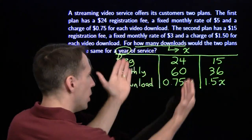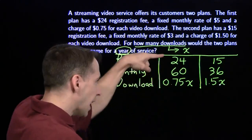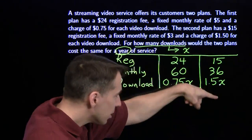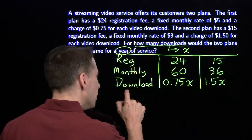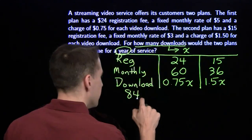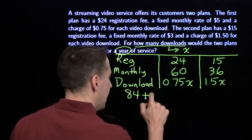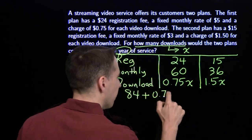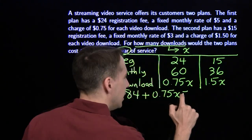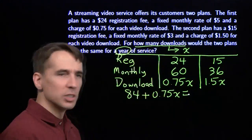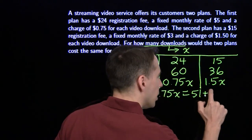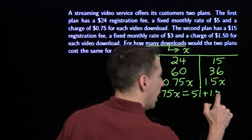Now I have all my information in a nice table. We can build our equation — we add these up to get the whole fee for the first plan, add these up to get the whole fee for the second plan, and we want these two to be the same. When I add the first column up, I get 84 plus 0.75x, and that has to equal what I get when I add the second, which is 51 plus 1.5x.